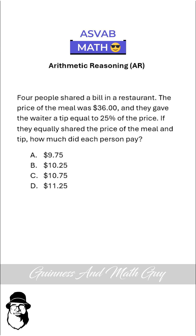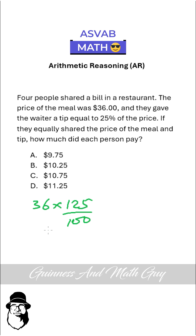Four people shared a bill in a restaurant. The price of the meal was $36 and they gave the waiter a tip equal to 25% of the bill. So they paid a total of 125% of the bill — this is the total price they paid, the price plus the tip.